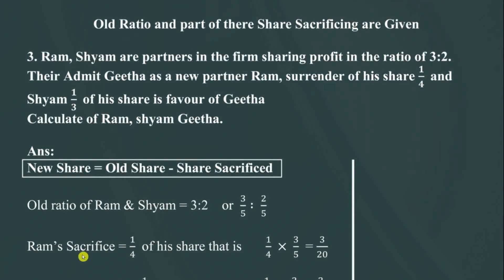Hey, welcome back to the series on accountancy Chapter 3 - Admission of a Partner. In this video, the technique we are covering involves the old ratio and part of the share sacrifice. They admit Gita as a new partner.